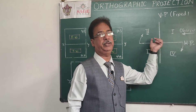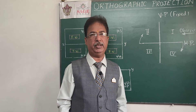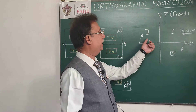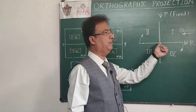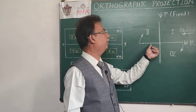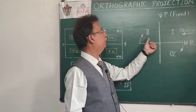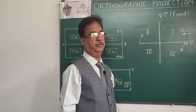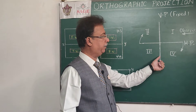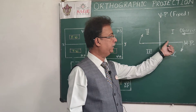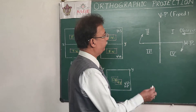Whenever an object is in the first quadrant, it is above HP and in front of VP. In the second quadrant, the object is above HP and behind VP — we consider the wall to be transparent so we can see the object from the same position. In the third quadrant, the object is below HP and behind VP. In the fourth quadrant, it is below HP and in front of VP.